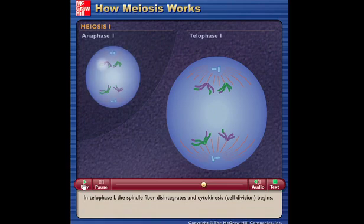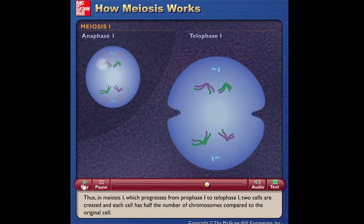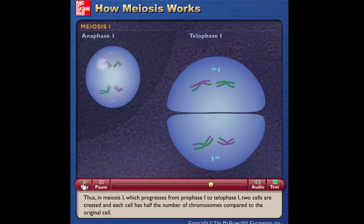In telophase I, the spindle fiber disintegrates and cytokinesis, or cell division, begins. Thus, in meiosis I, which progresses from prophase I to telophase I, two cells are created and each cell has half the number of chromosomes compared to the original cell.